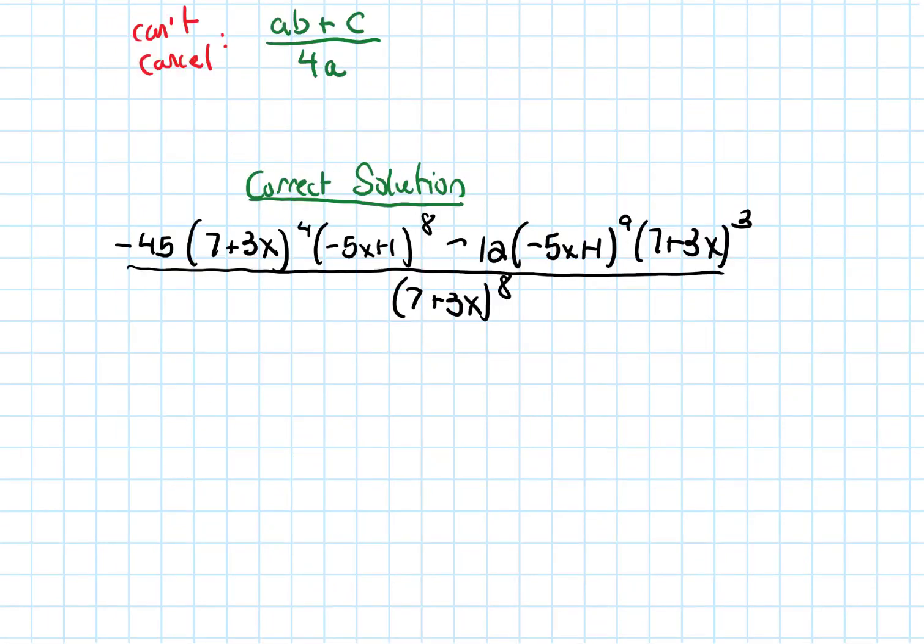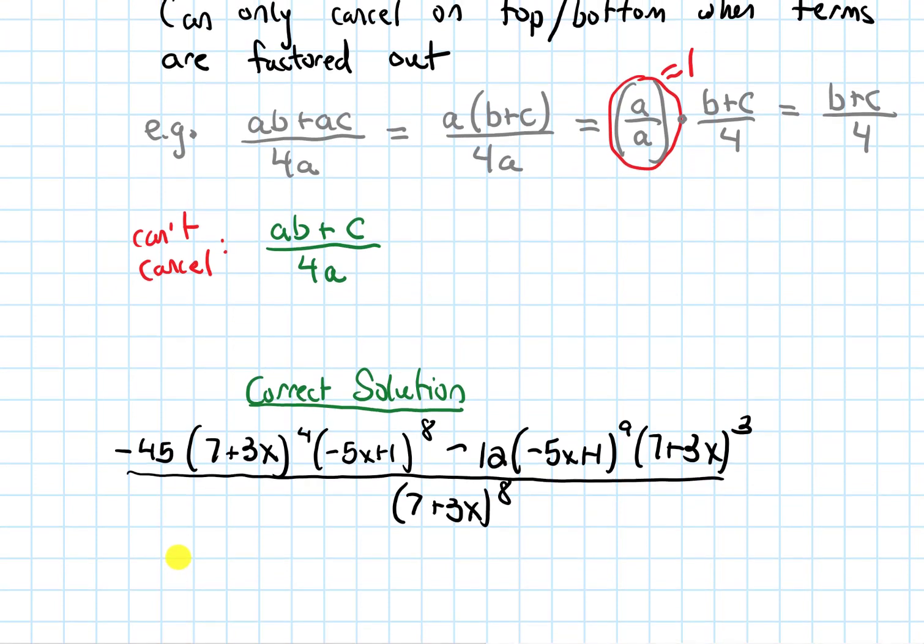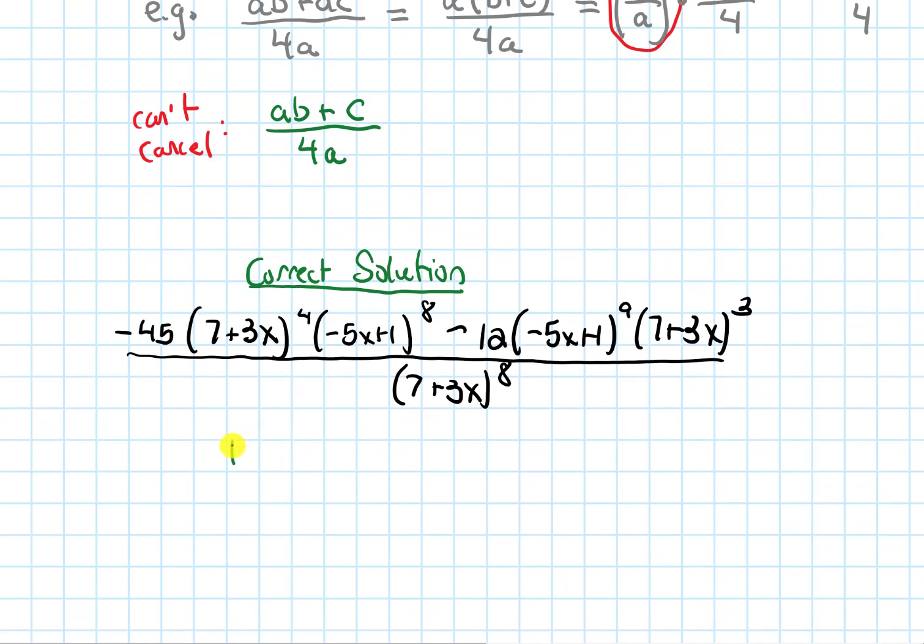Alright. So let's give a correct solution now. So I've copied down the original problem. So seeing that I can cancel on the top and on the bottom when I have stuff fully factored out, let's try to factor out the common terms.